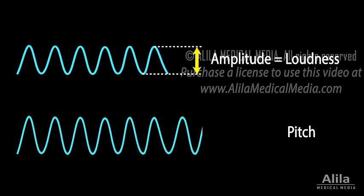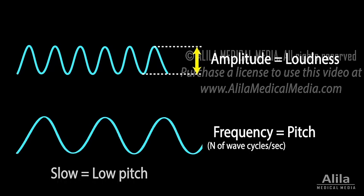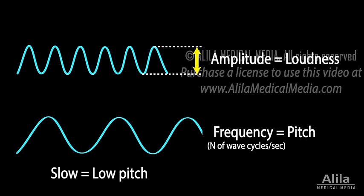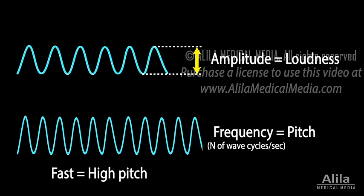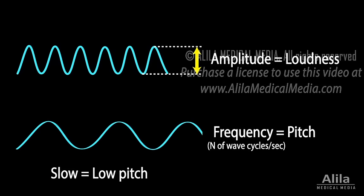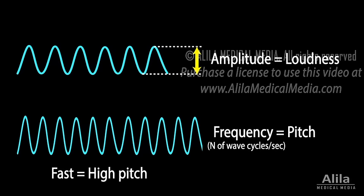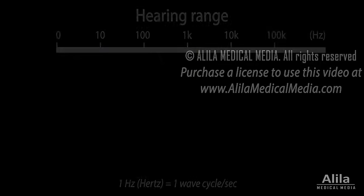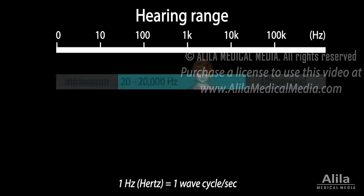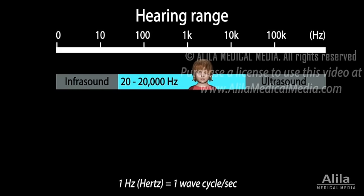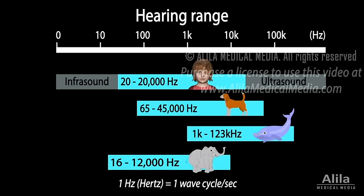The pitch of a sound is related to the frequency of sound waves, which indicates how fast the sound source vibrates. The higher the frequency, the higher the pitch. Frequency is measured in hertz. A young human ear can detect sounds in the range of 20 to 20,000 hertz. Some animal species can hear frequencies well beyond this range.